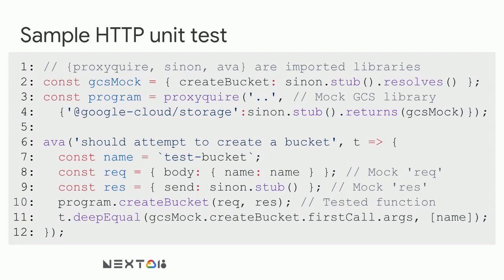Moving down to our test on line six — we attempt to create a bucket but do not actually create one. On line seven, we declare our bucket name. Lines eight and nine declare mock versions of request and response parameters, since our function takes those parameters and we have to fake them. On line ten, we run our original function using program.createBucket, passing the fake request and response objects just as if Cloud Functions had provided the real ones. On line eleven, we check that our fake createBucket function was called with the correct argument — in this case, the name constant.